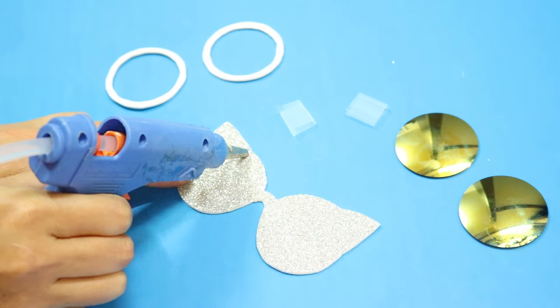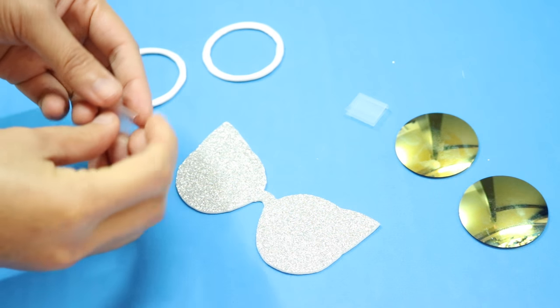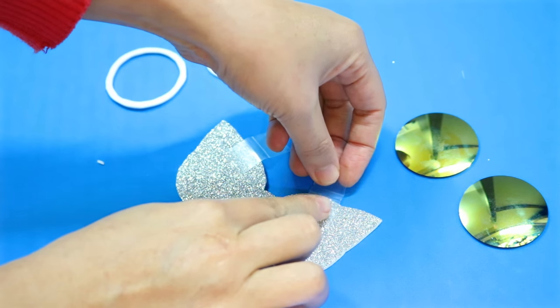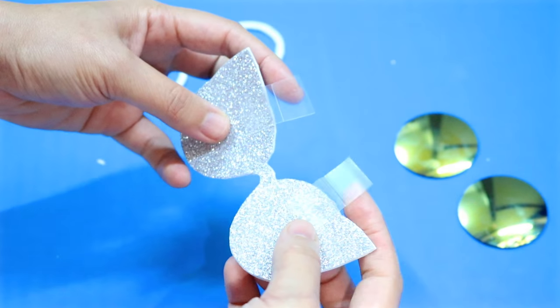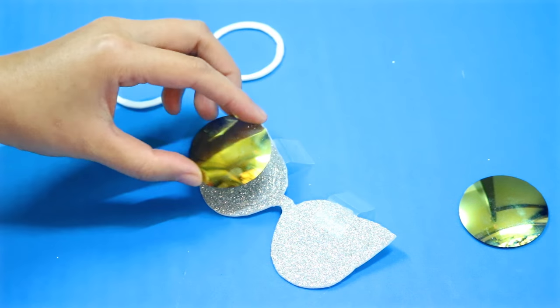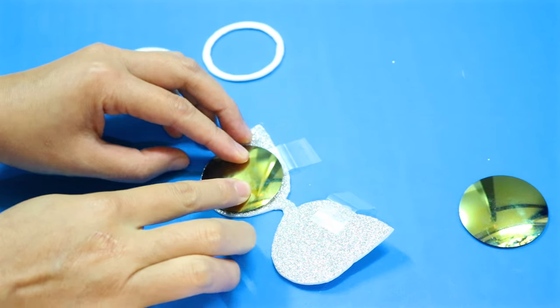For the final step, all you need to do is to glue everything together. Here, I'm using a hot glue gun to attach the hinges on the frame first. Then, I'm applying more glue to stick the lenses on, followed by the 2 white circles.